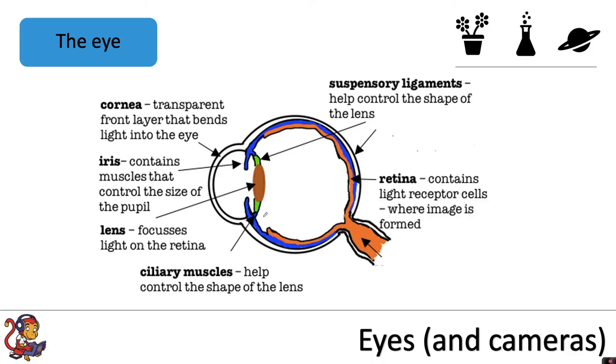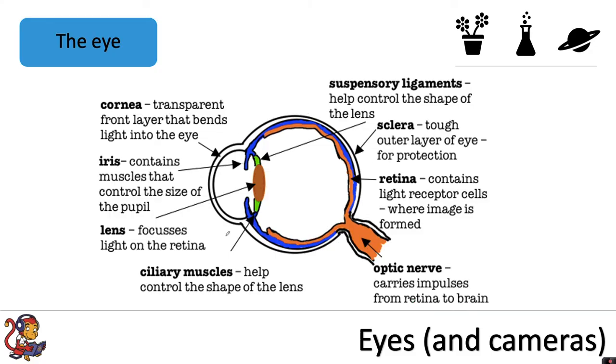The retina at the back of the eye contains light receptor cells and this is where the image is formed. The optic nerve carries the impulses from the retina to the brain. Around the whole eye to protect it is the sclera. This is a really tough outer layer of the eye for protection.